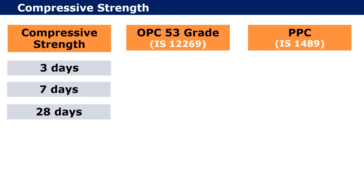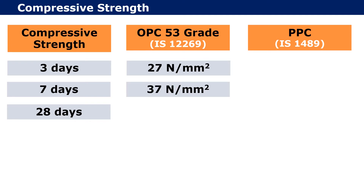For OPC at 3 days, it achieves a compressive strength of 27 N/mm². At 7 days, OPC achieves a compressive strength of 37 N/mm². And at 28 days, OPC achieves a compressive strength of 53 N/mm².